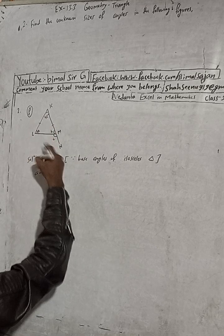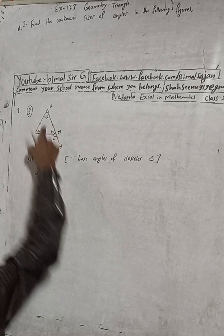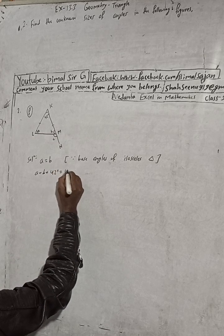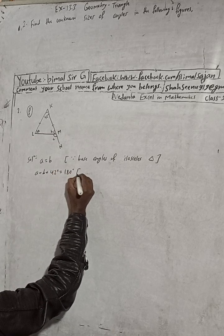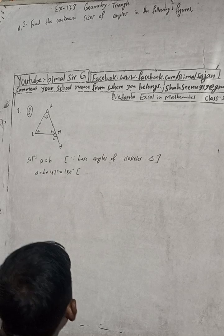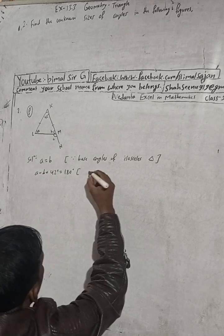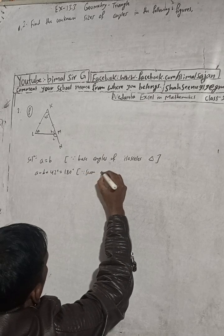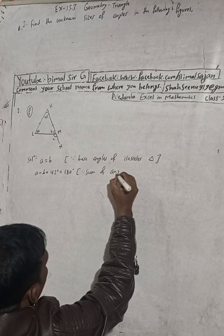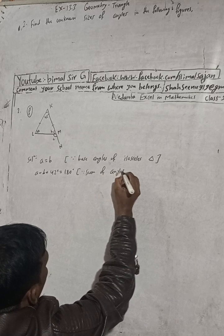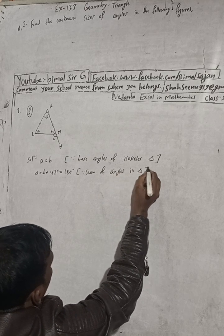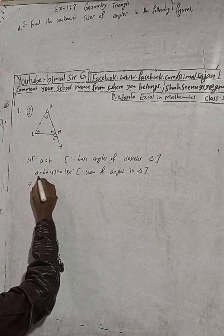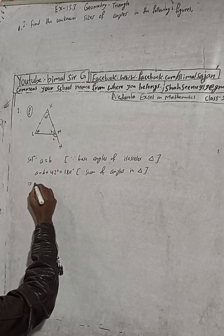...this 42 degrees. A plus B plus 42 degrees equals 180 degrees. Reason: sum of angles in a triangle is 180 degrees. So now we can write here A plus A...